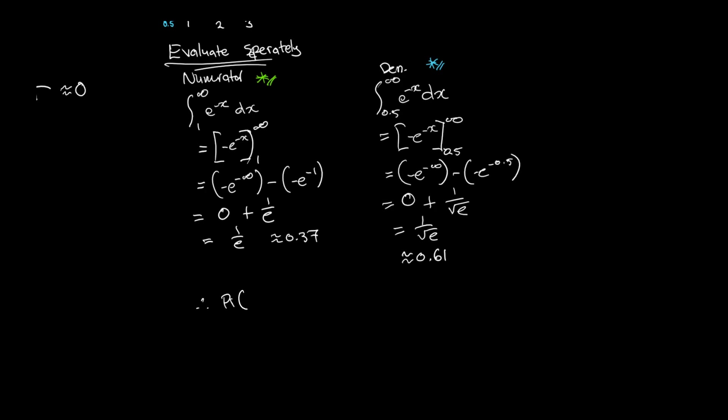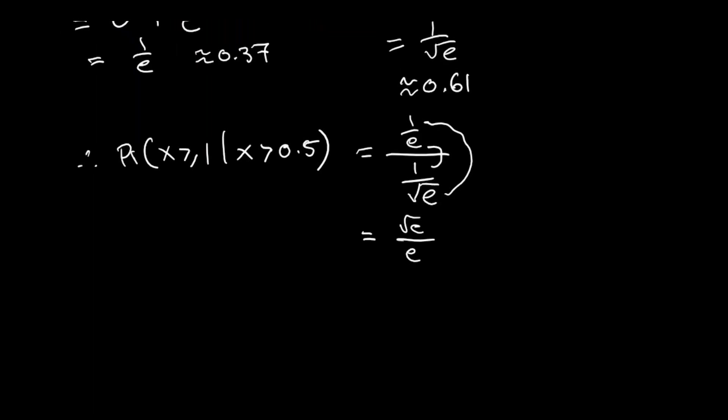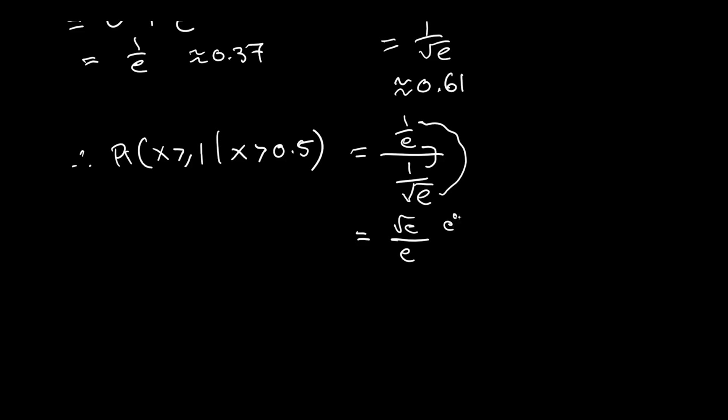Therefore, the probability that x is greater than or equal to 1, given that x is greater than 0.5, I'd say that's going to be equal to the numerator, which is 1 over e, divided by 1 over root e. Simplifying this, that's going to be root e over e, which is e to the power of 0.5 divided by e to the power of 1, which is equal to e to the power of negative 0.5, so that's 1 on root e.